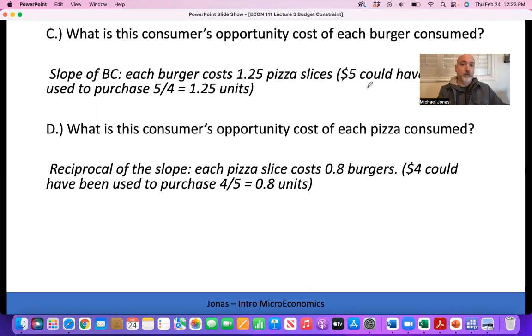If we buy one more pizza, it costs us $4. We could have spent that $4 on burgers, which cost $5 per unit, so we couldn't quite buy a whole burger. Don't try this at McDonald's - you can't ask for 80% of a burger. But that would be the per unit trade-off, 0.8 or 4 over 5.